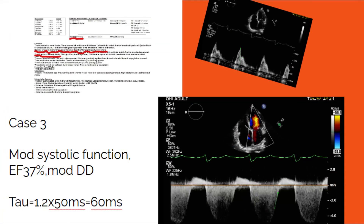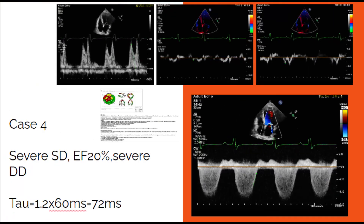The third case is a patient with moderately decreased systolic function. Tau measures 60 ms, which is consistent with moderately decreased diastolic function. The fourth case is a patient with severely decreased systolic function. Measurement of tau is 72 ms, which means severe diastolic dysfunction.